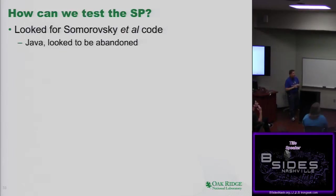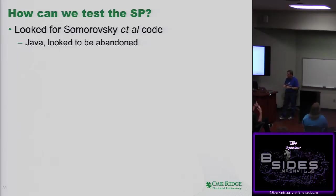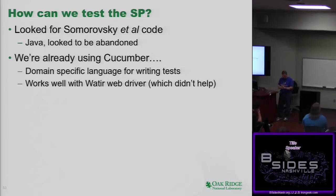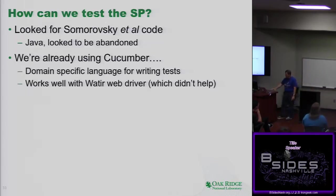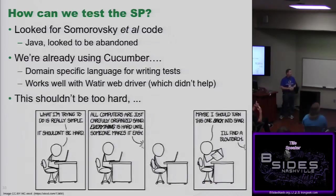I mentioned Samorowski's 2012 paper. We went to look for their code — it was written in Java, not my language of choice, and looked to be largely abandoned; this was probably somebody's master's thesis. JT and I have been working on testing of existing infrastructure using synthetic transactions. We've been using Cucumber, a domain-specific language for writing tests, with a great interface with Watir WebDriver — except Watir didn't help for reasons I'll explain. But we've got the pieces parts. This shouldn't be too hard.